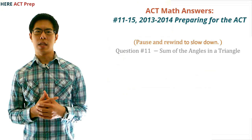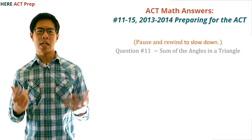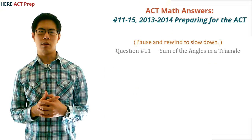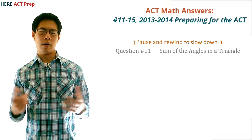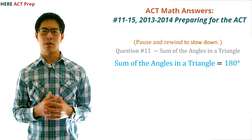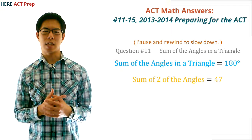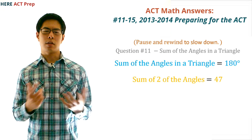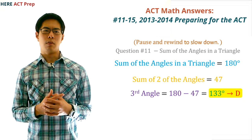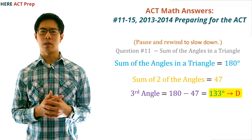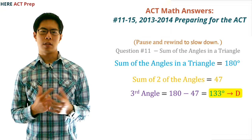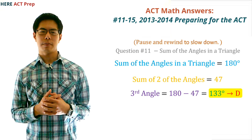Question number 11. The concept this question tests is sum of the angles in a triangle. The sum of the angles in a triangle is 180, and we're told that two of the angles add up to 47 degrees. So to find the third angle, we simply do 180 minus 47, which gives us 133 degrees. So D is the correct answer.